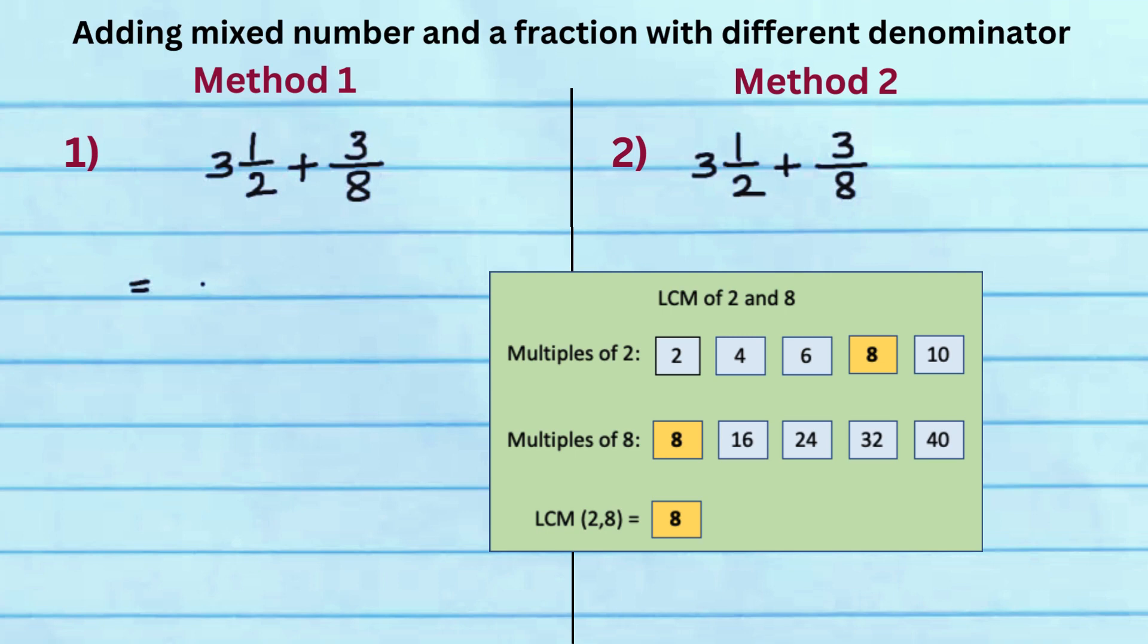In method 1, write the whole number 3 as is. Rewrite the fraction 1 by 2 using common denominator 8 to get 4 over 8. Since the denominator is already 8, keep the fraction 3 over 8 as is.